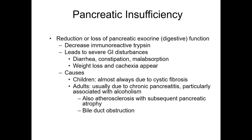Pancreatic insufficiency is a reduction or loss of pancreatic exocrine digestive function. Decreased immunoreactive trypsin leads to severe GI disturbances — diarrhea, constipation, malabsorption, weight loss, and cachexia. In children, it's almost always due to cystic fibrosis; in adults, it's usually due to chronic pancreatitis, particularly associated with alcoholism. Atherosclerosis with subsequent pancreatic atrophy and bile duct obstruction can also cause pancreatic insufficiency.